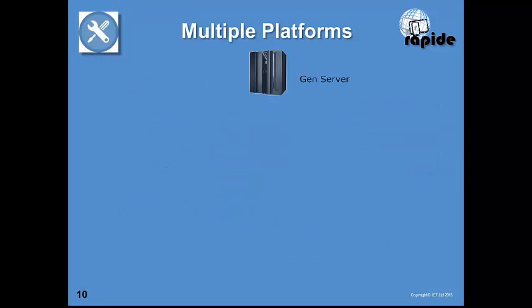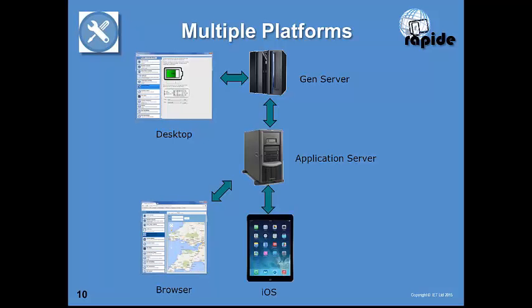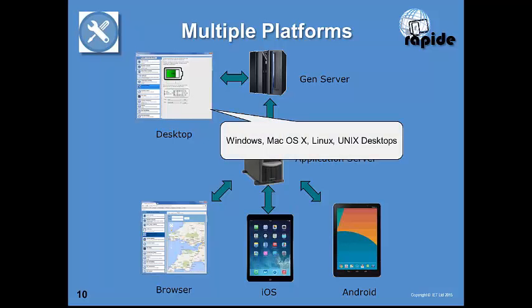For multiple platform support, taking a standard Gen server as a starting point, you can use RAPID as a desktop application — essentially a replacement for a Windows GUI application. A key benefit is that RAPID desktop applications can be made self-updating, so once installed you never need to update them again. For other platforms, an application server serves the application to browsers, iOS clients, or Android clients. Desktop support includes not only Windows but also Mac OSX, Linux, and Unix. The application server can be any JEE-compliant server like WebSphere, WebLogic, or JBoss.